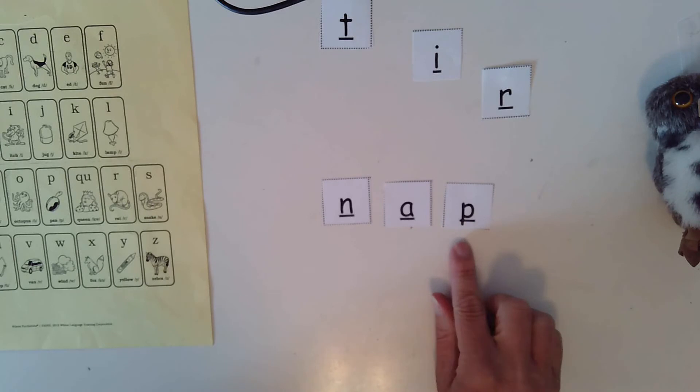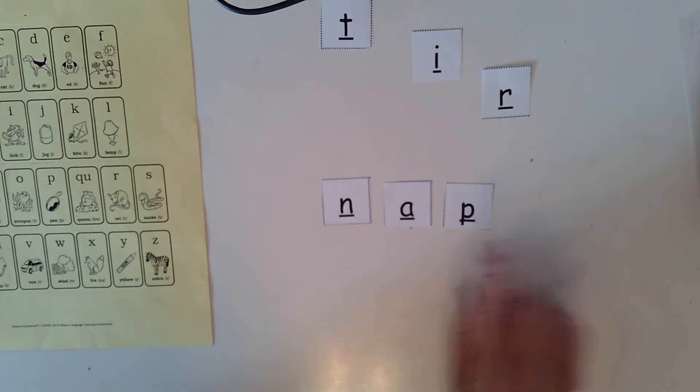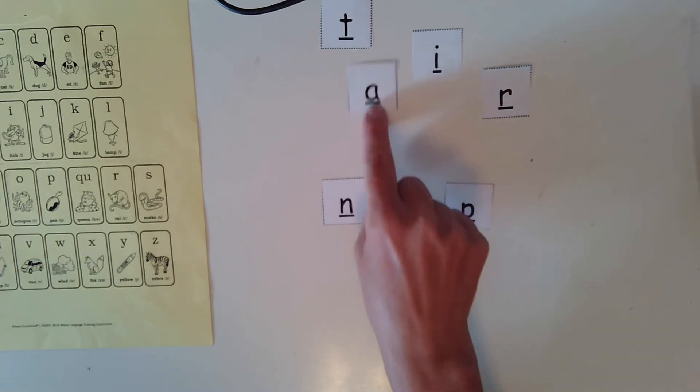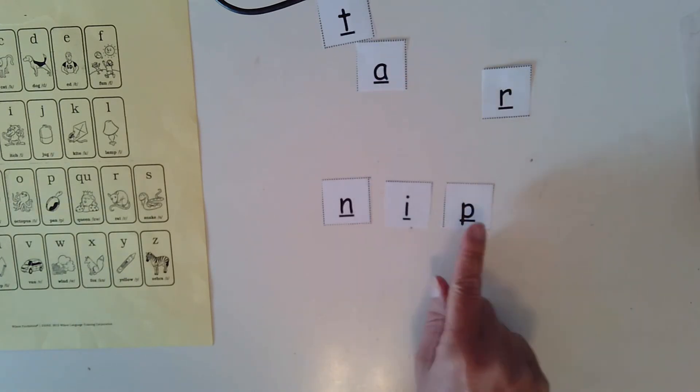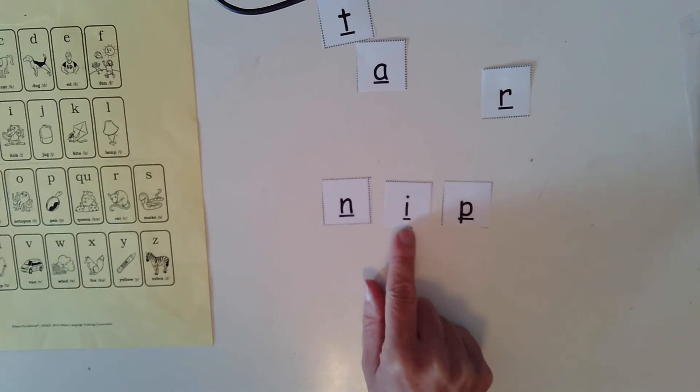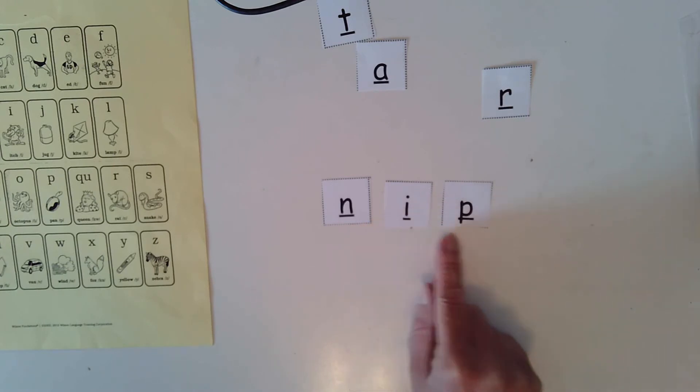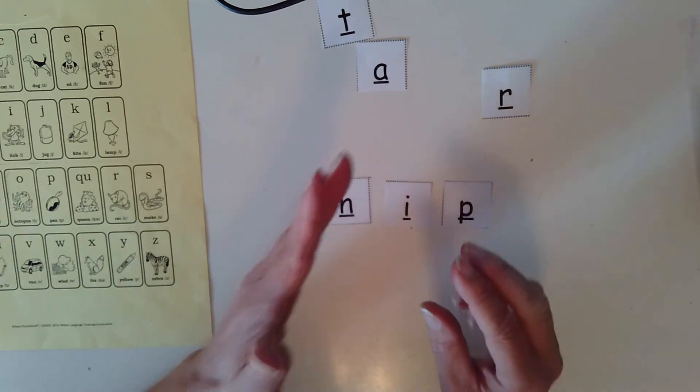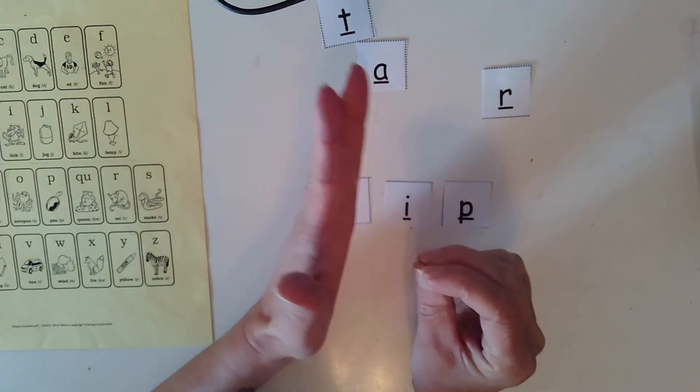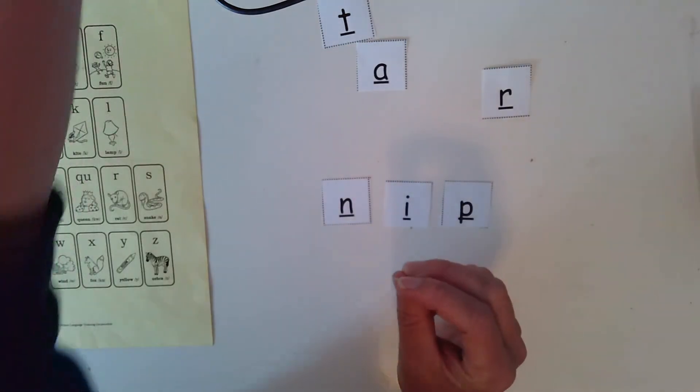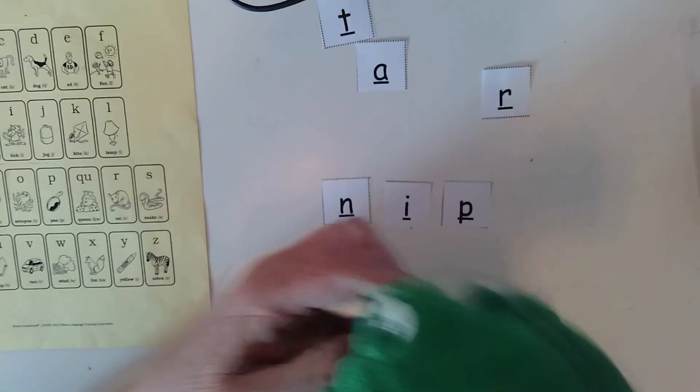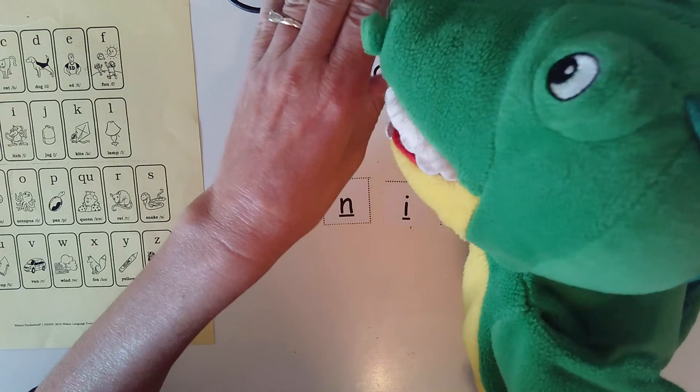All right, we're going to change our middle sound again. We're going to change our A to an I. So now we have n-i-p. What word did we make? Nip. Sometimes a dog will just nip a little bit. It's not a big bite, it's just a little nip. Allie alligator could do a little nip. Not a bite, just a little nip.